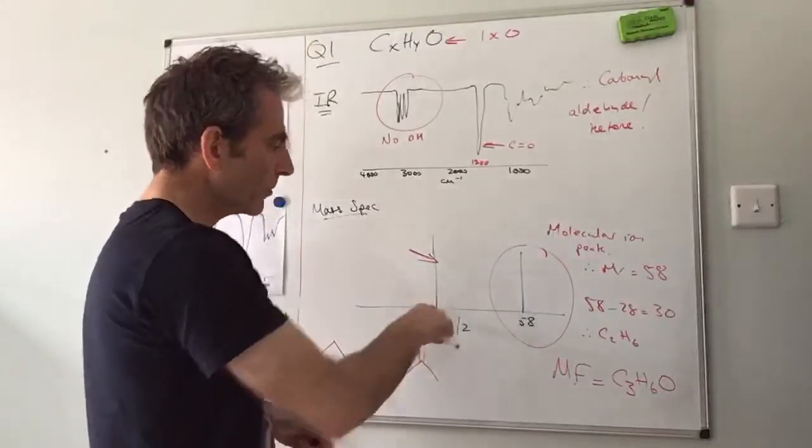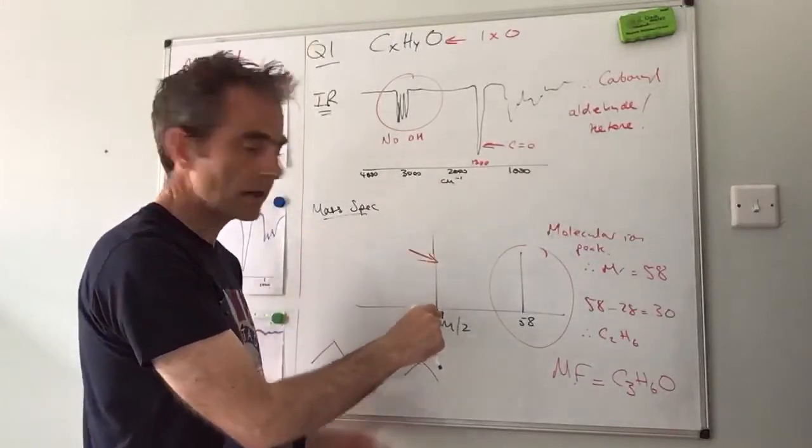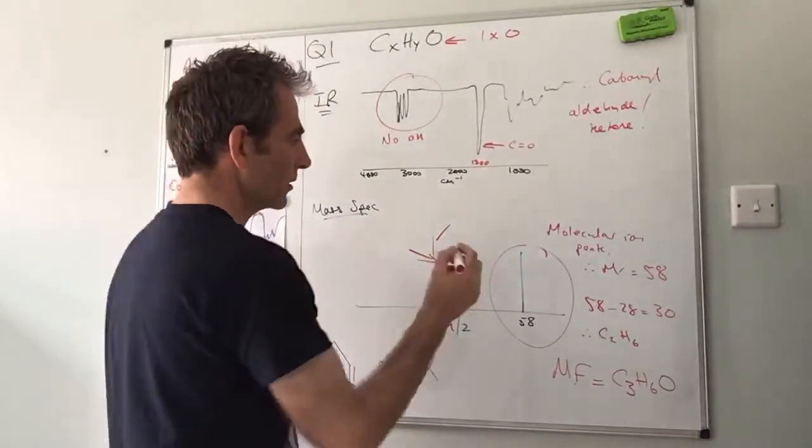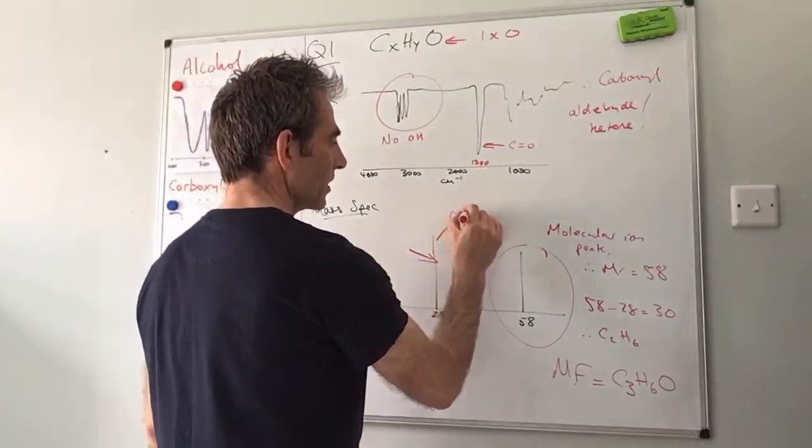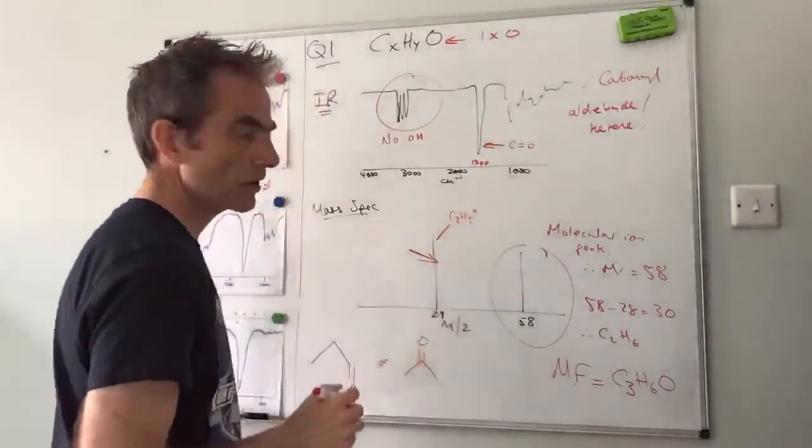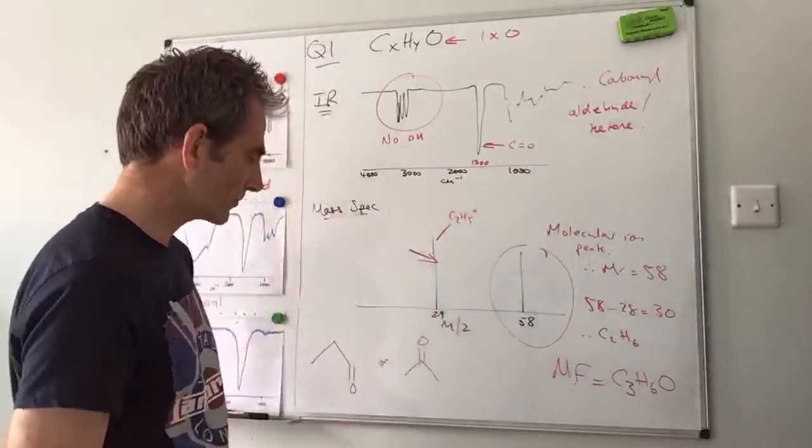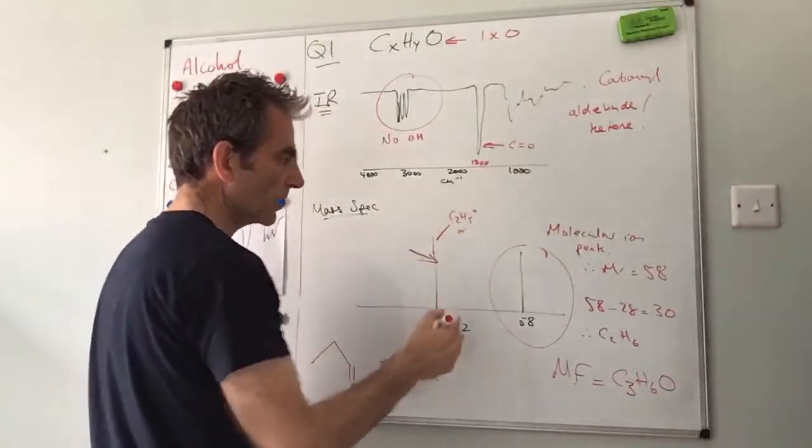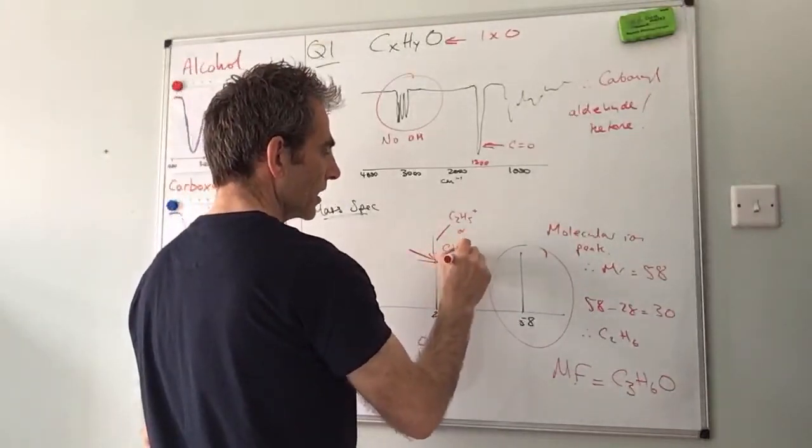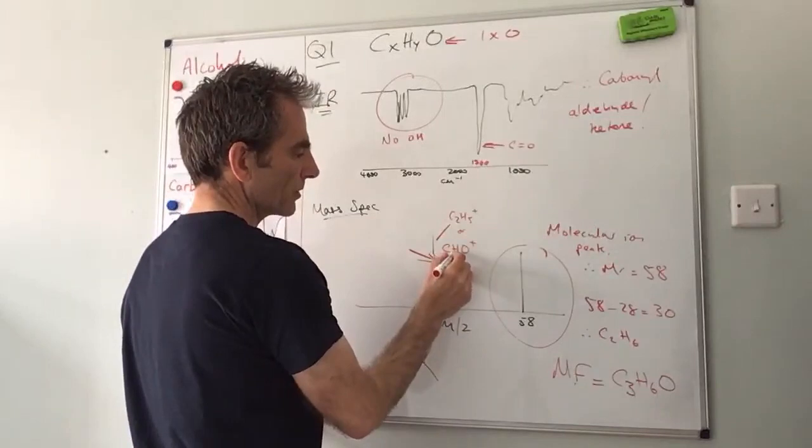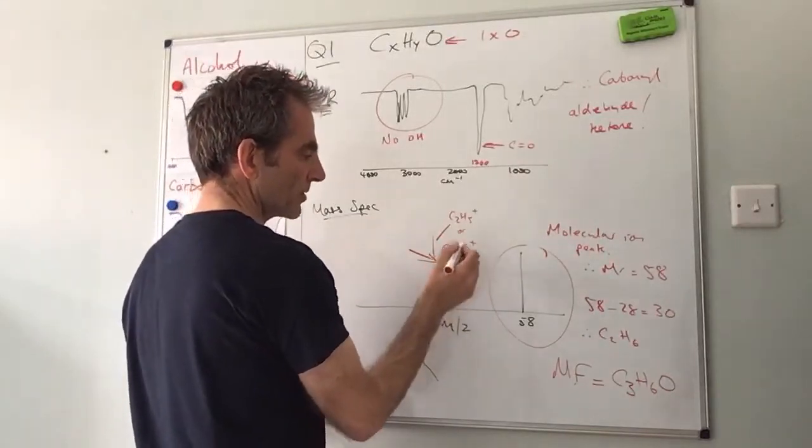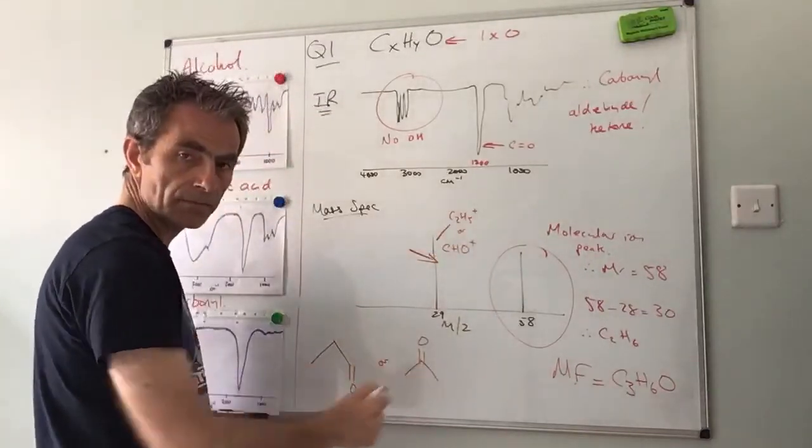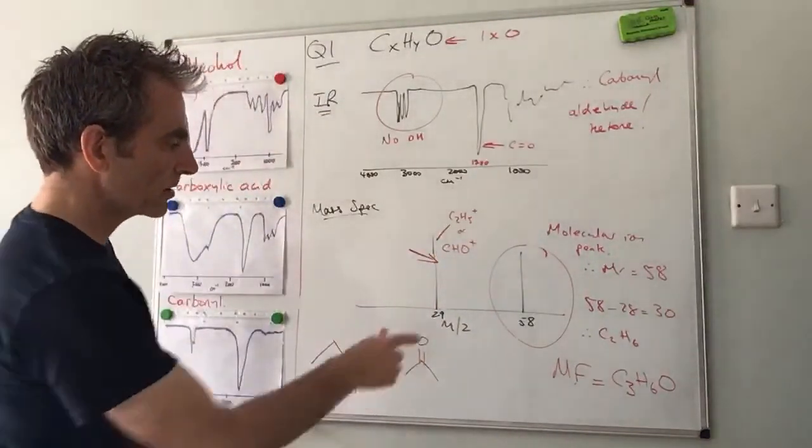So we're looking for one of these molecules that could give us this fragment at 29. Now again, the more mass spectra you look at, you'll become familiar with 29 as a fragment peak.